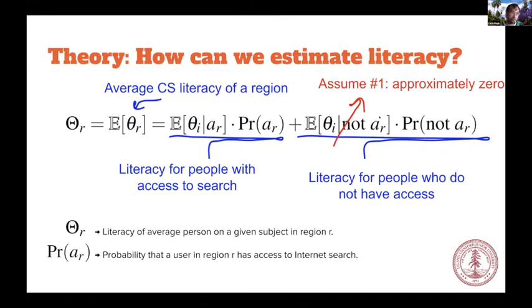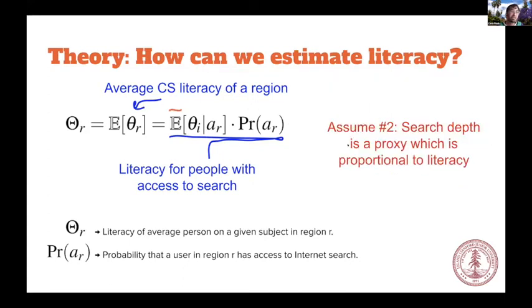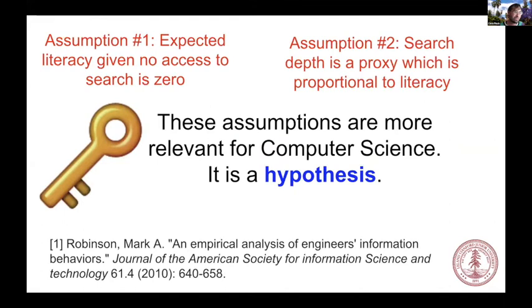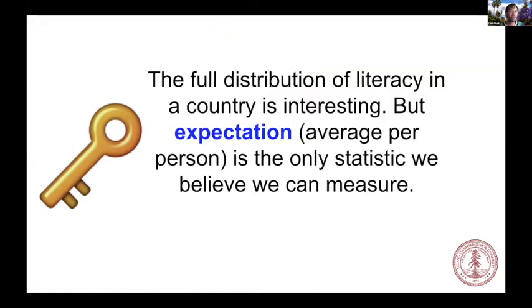We started to make a few assumptions. First, we assume for computer science, if you don't have access to the internet, your expectation of computer science literacy is close to zero. And we made a second assumption that search depth is a proxy for literacy — we get very deep into that in the paper. Long story short, we believe this makes sense for engineering: there's lots of research to suggest that when engineers are solving problems and learning, they do use inquiry, whereas for other disciplines it might not make so much sense. We do have a nice theoretical basis for saying if we can figure out how much search volume there is, we can figure out how much people are literate in computer science. We call this a pseudo index because we're just doing our best to see what sort of signals we come back up with, and we want everyone to know there are some real important assumptions and confounds to keep in mind.